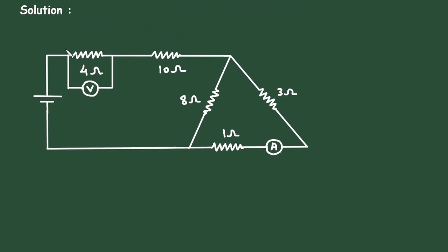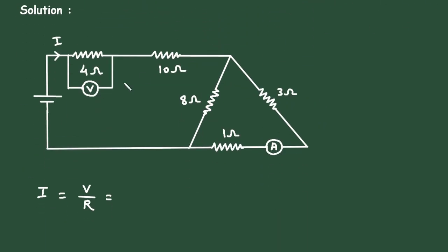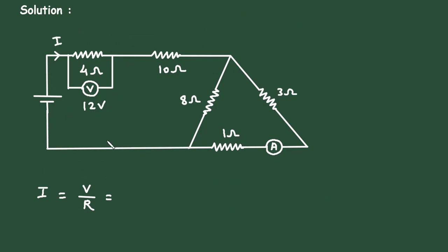So first of all, let us find this current. This current I will be I equals V divided by R. The value of voltage is 12 volt, so it will be 12 divided by resistance value is 4 ohm. So the current will be 3 ampere. So this current is 3 ampere.